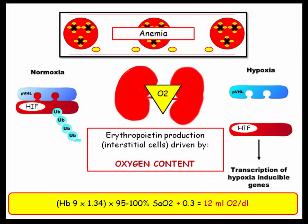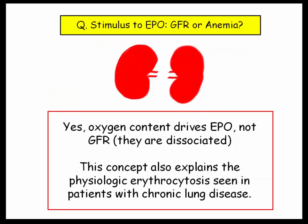Please note: erythrocytosis is one of the hallmarks of von Hippel-Lindau syndrome, where this gene regulator is mutated and hypoxia-inducible factor is always turned on. So yes, oxygen content drives erythropoietin production, not the GFR — they are dissociated. This concept also explains the physiologic erythrocytosis seen in patients with chronic lung disease, as the chronic hypoxic state stimulates erythropoietin by the kidneys.